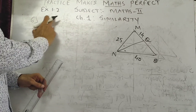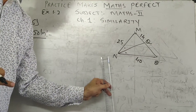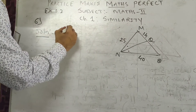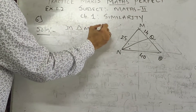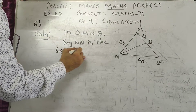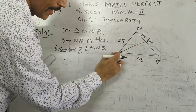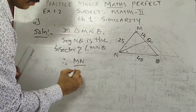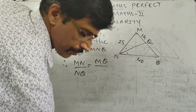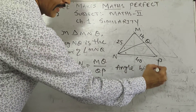Now sum number 6 of exercise 1.2. From the diagram you can see it is based on the property of the angle bisector — angle bisector theorem. In triangle MNQ, segment MQ is the bisector of angle MNQ. Therefore MN upon NQ is equal to NQ upon QP — by the angle bisector theorem.